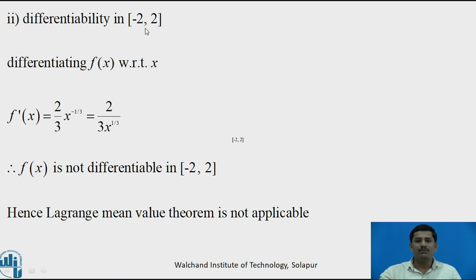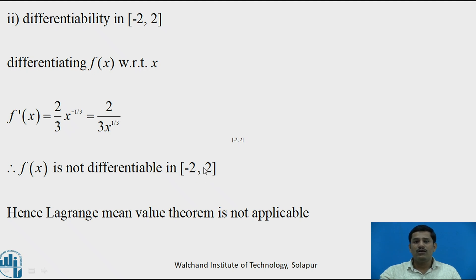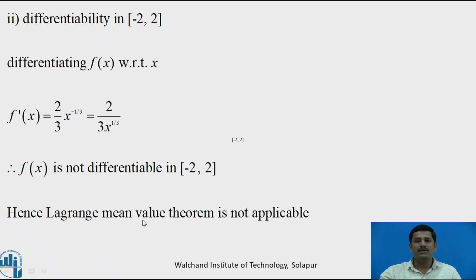Next condition: differentiability in (-2, 2). Here f(x) = x^(2/3), so f'(x) = (2/3) x^(-1/3) = 2 / (3 x^(1/3)). This derivative exists throughout (-2, 2) except at x = 0, where it takes an infinite value. Therefore f(x) is not differentiable throughout the interval. Hence not all conditions of Lagrange's mean value theorem are satisfied, and for this problem, Lagrange's mean value theorem is not applicable.